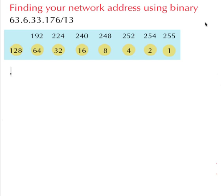The first thing you've got to do is convert all these different numbers into binary. I'm making a few assumptions here: you know what binary is, and you know your actual bit values like 128, 64, 32, 16, 8, 4, 2, 1. So let's crack on with it and convert 63 into binary.